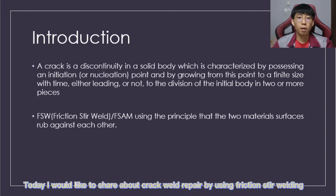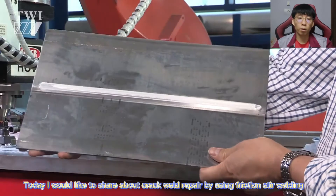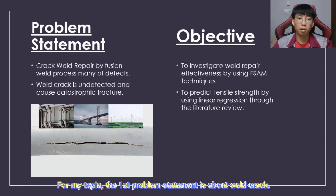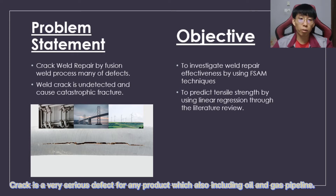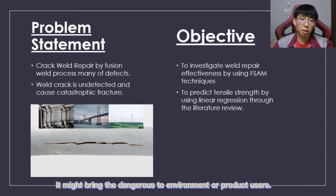Today I would like to share about crack weld repair by using friction stir welding. The first problem statement is about weld crack. Crack is a very serious defect for any product, which also includes oil and gas pipelines. A small crack can always cause catastrophic fracture. If the crack is undetected, it might bring danger to the environment or product users.